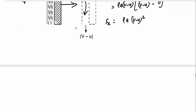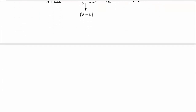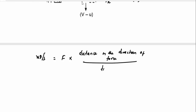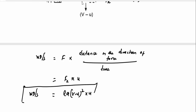In the plate, it is creating some work. That work can be calculated as work done per second, which is equal to force into distance in the direction of force by time. We have already calculated the force which is Fx. Distance by time is velocity, and that velocity is u. So work done per second is equal to rho A (v minus u) the whole square into u. By using this relation, we can calculate work done by the jet for a particular time.